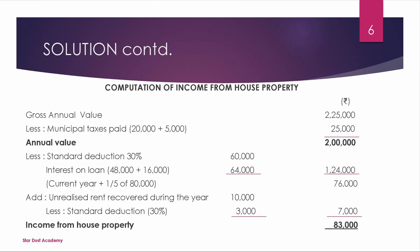That is minus. Unrealized rent recovered is 10,000 — this is added back. Standard deduction of 30% is deducted. After applying standard deduction of 30% and adding unrealized rent of 7,000, the total income from house property is 83,000.